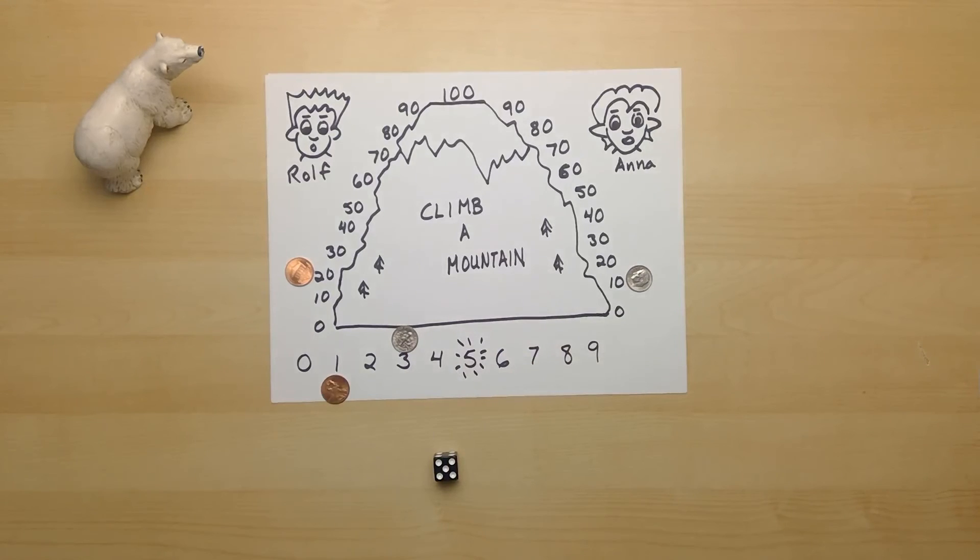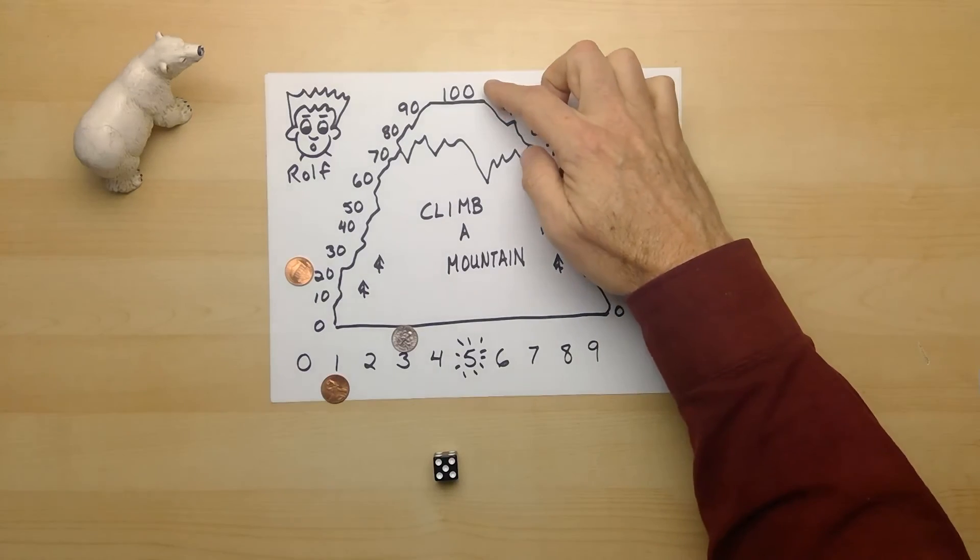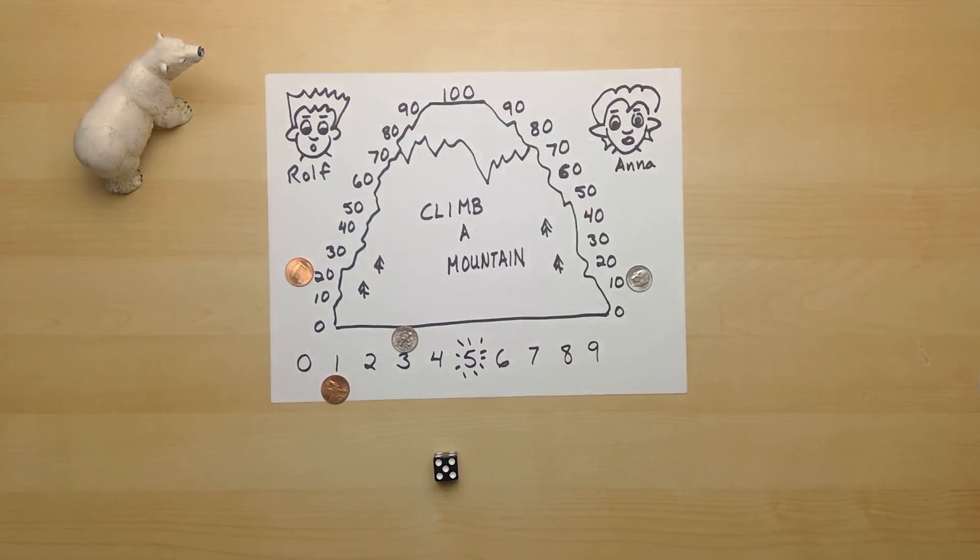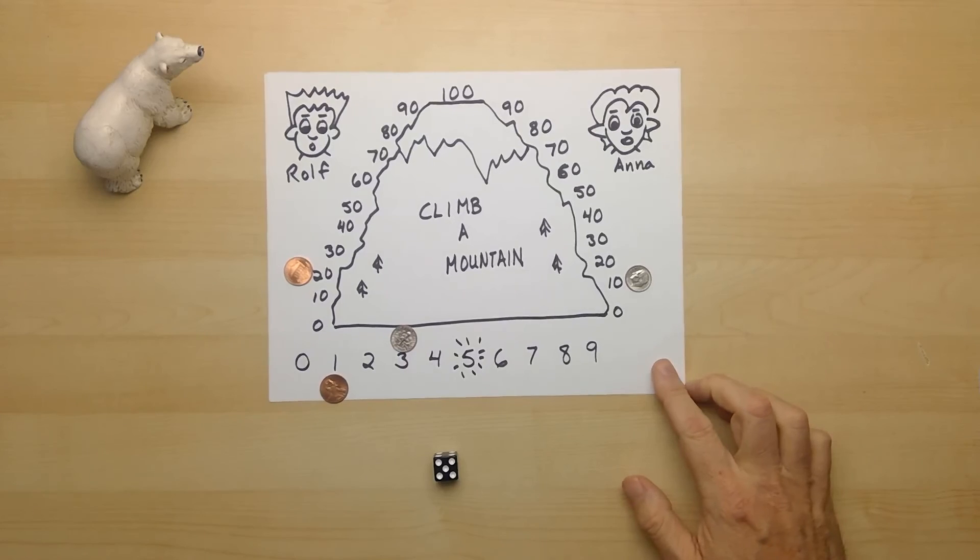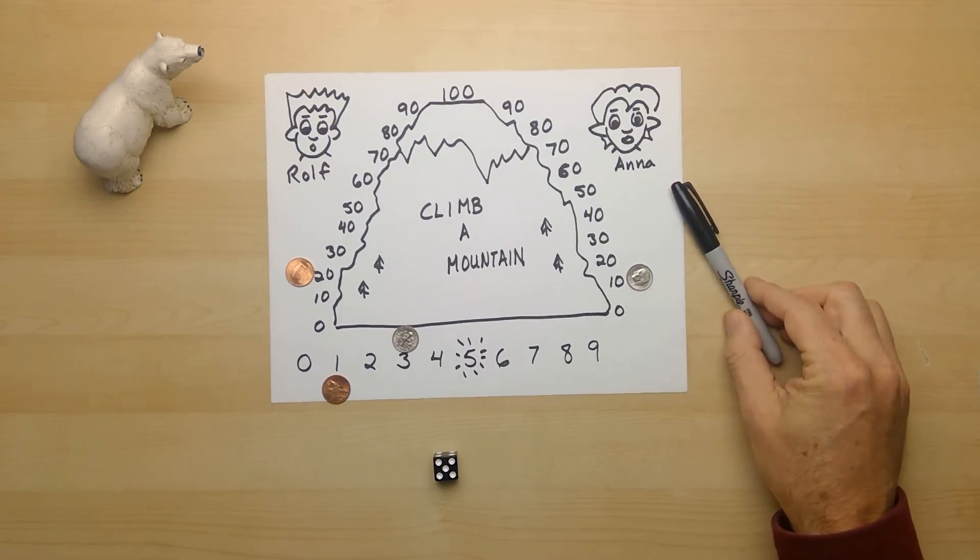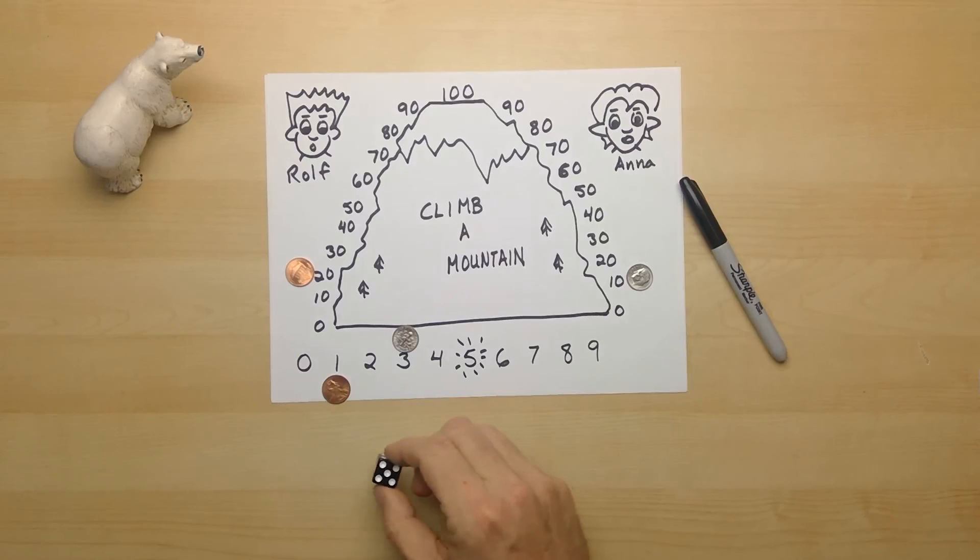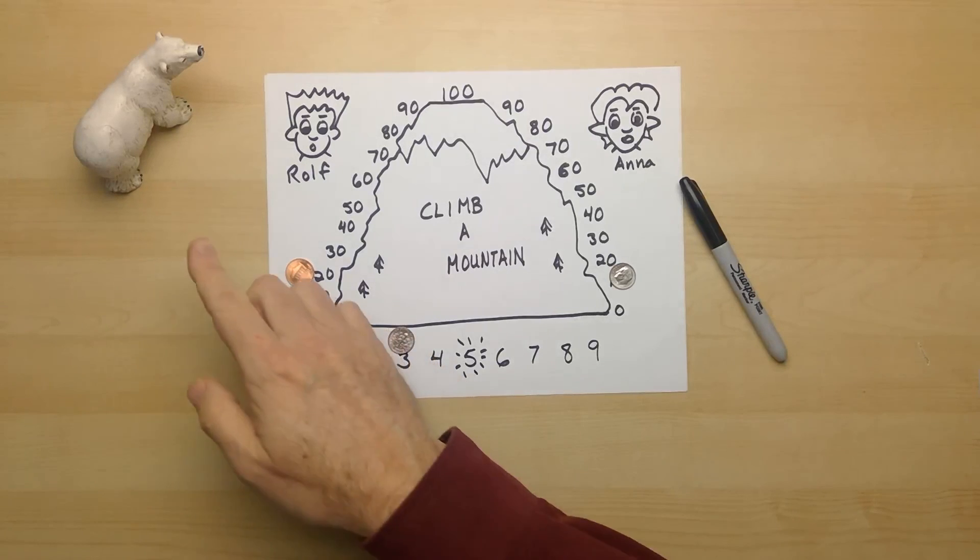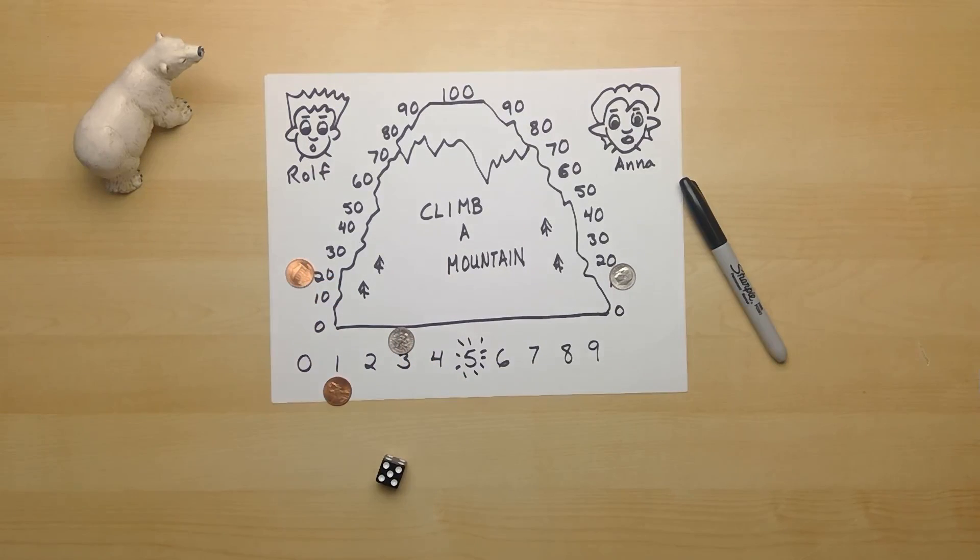So this game is called Climb a Mountain. And for this game, you need to have some paper. You need to have something to write with. You need to have a dice. You need to have some playing pieces. And you probably needed to have a bear. I do hope you enjoy this game. I'll have another one for you soon.